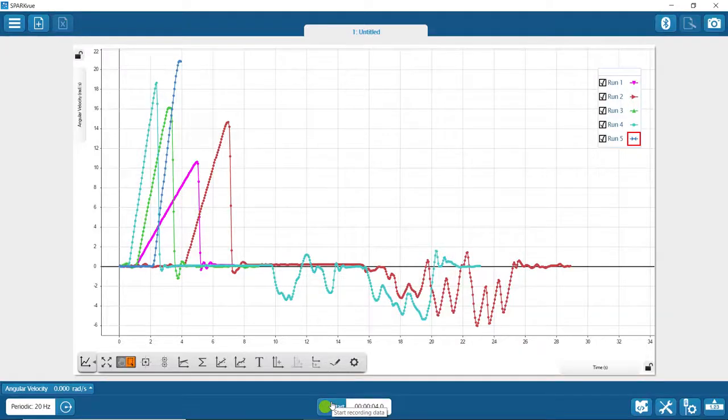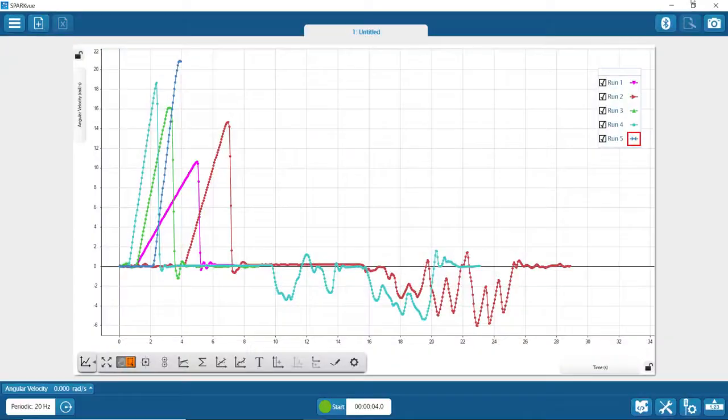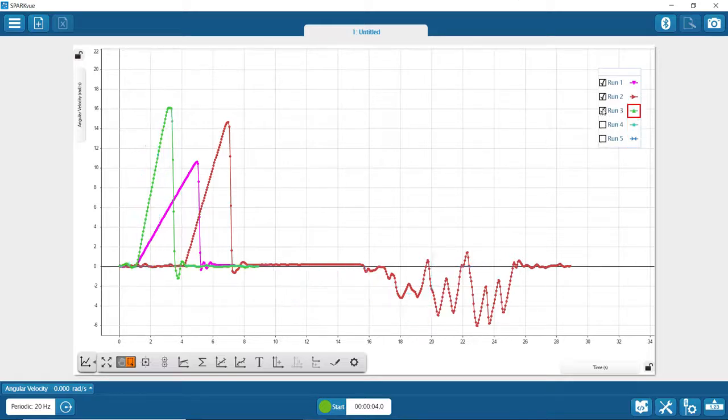So now we have five trials. You're going to have to get the angular acceleration for each trial. Well, let's go back to run one. How do we do that? I just uncheck these other runs.